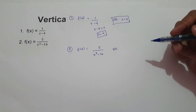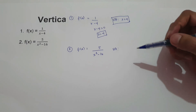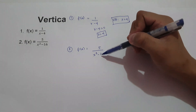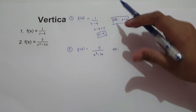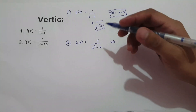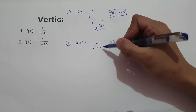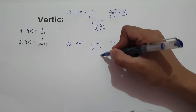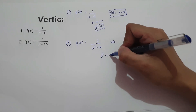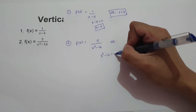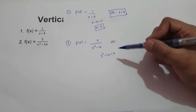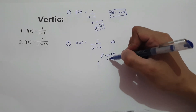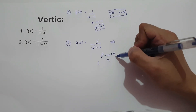On number 2, we have f of x equals 5 over x squared minus 16. To find the vertical asymptote, let us equate x squared minus 16 equal to zero. To find the value of x, we just simply factor x squared minus 16.